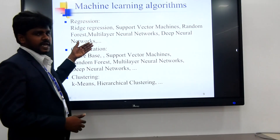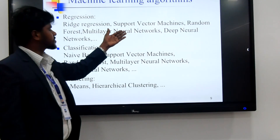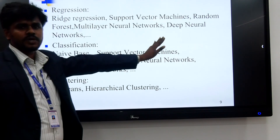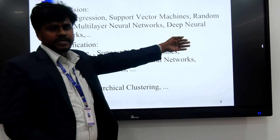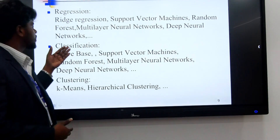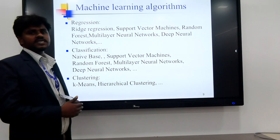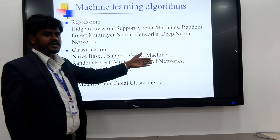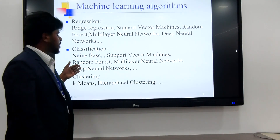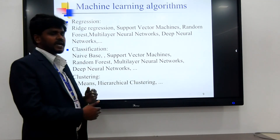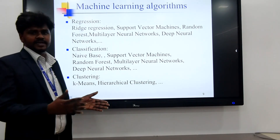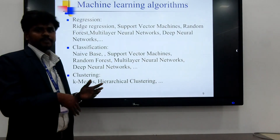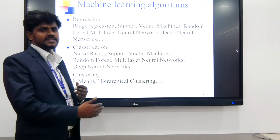Sample algorithms used nowadays include SVM — Support Vector Machine — and Random Forest, which are the most used algorithms in machine learning today. Multi-layer neural networks are also widely used for the machine learning process.